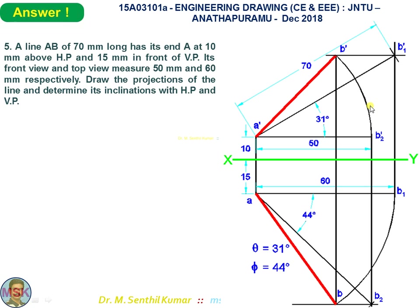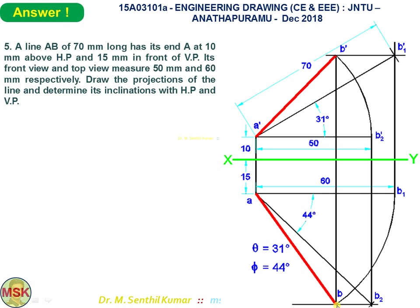After completing both preliminary sets, draw loci through B1' and B2'. With A' as center and A'-B2' as radius, draw an arc to get B' on the locus — line A'-B' is the final front view. With A as center and AB1 as radius, draw an arc to get B on the locus — line AB is the final top view. Final check: a projector from B' must pass through B. Theta = 31°, phi = 45°.